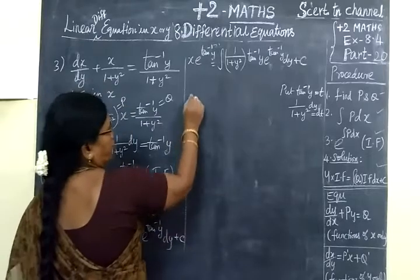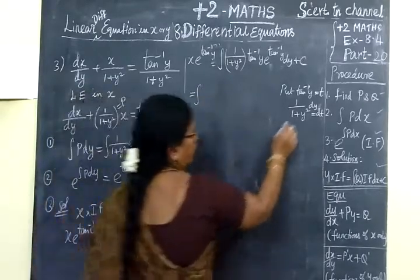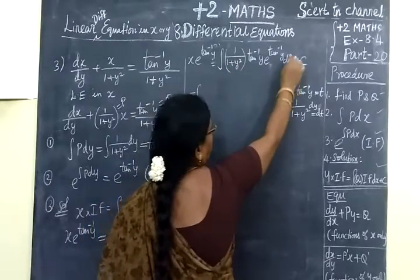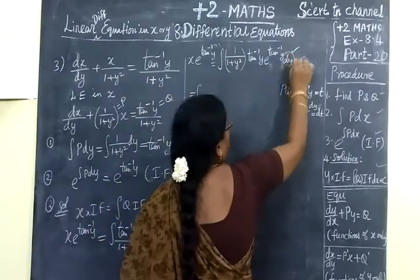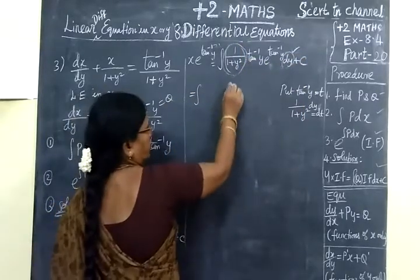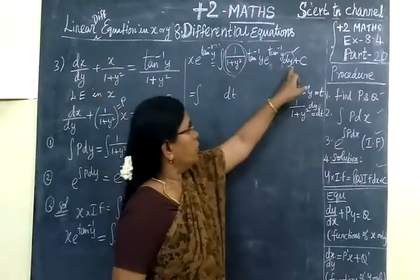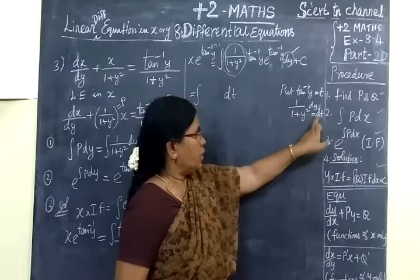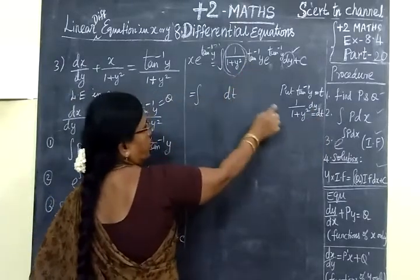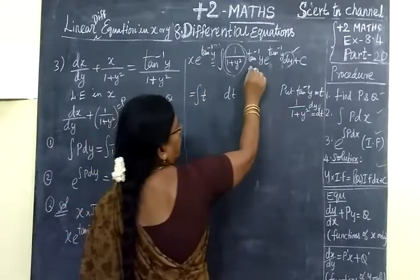We make the substitution: the integral of (1/(1+y²)) dy becomes dt. So tan⁻¹y becomes t, and dy equals dt. The integral becomes the integral of t times e to the power of t dt.